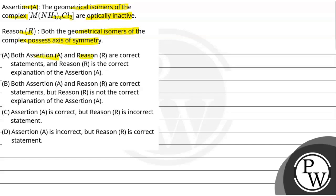Option A: Both assertion and reason are correct statements and reason is the correct explanation of the assertion. B: Both assertion and reason are correct statements but reason is not the correct explanation of the assertion. C: Assertion A is correct but reason R is incorrect. D: Assertion A is incorrect but reason is correct statement.